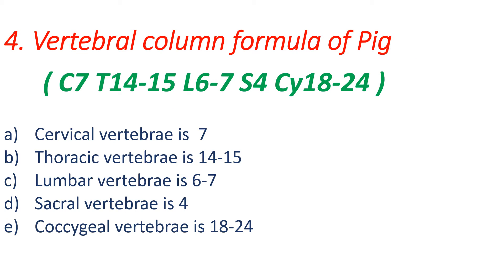Next is the vertebral column formula of pig. Pig is also a mammal. In the case of pig: C7, T14 to 15, L6 to 7, S4, coccygeal 18 to 24. Cervical is 7, thoracic 14 to 15, lumbar vertebrae 6 to 7, sacral 4, coccygeal 18 to 24. You should remember that the minimum number of sacral vertebrae is found in dog — only 3 sacral vertebrae are present in dog.